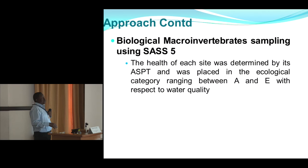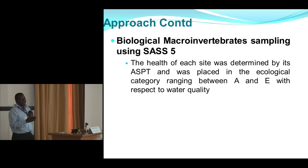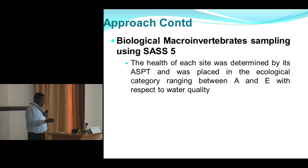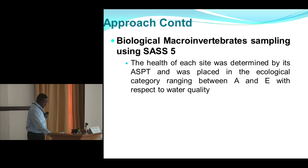To determine health for a particular site, the health assessment is not for the entire river stretch but for the specific site where macroinvertebrate sampling was done. Once you have the average score per taxa, you compare it with the total SAS score, and from that you get a category ranging from A to F, which tells you the health of the river at that site.